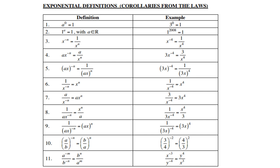Definition 7: a over x to the power negative n — a is the coefficient, so only the x goes up and becomes x to the power positive n. For example, 3 over x to the power negative 4 becomes 3 times x to the power positive 4. The 3 is unchanged. Definition 8: 1 over (ax) to the power negative n — the coefficient a goes nowhere; only x goes up and becomes x to the power positive n. For example, 1 over 3x to the power negative 4: the 3 remains in the denominator and only x goes up.